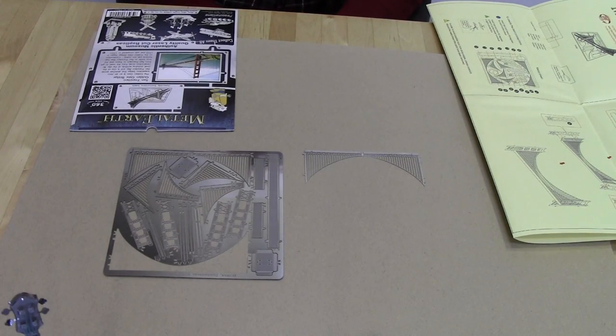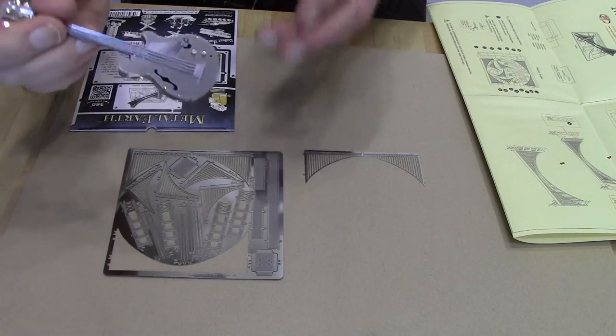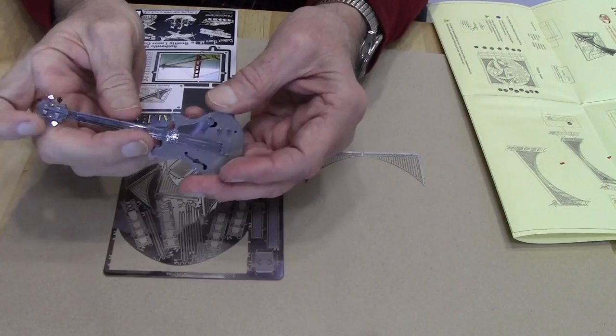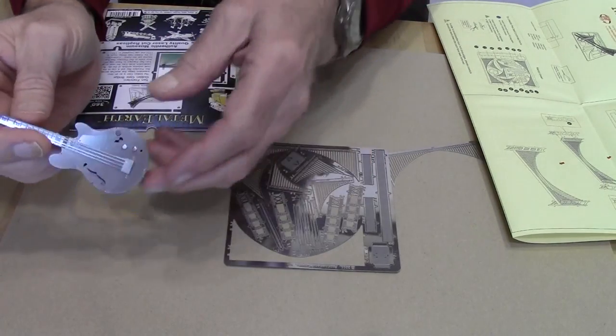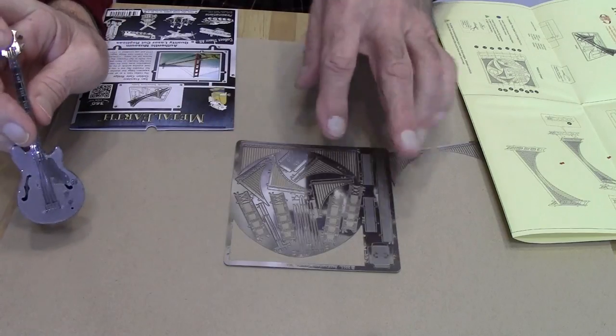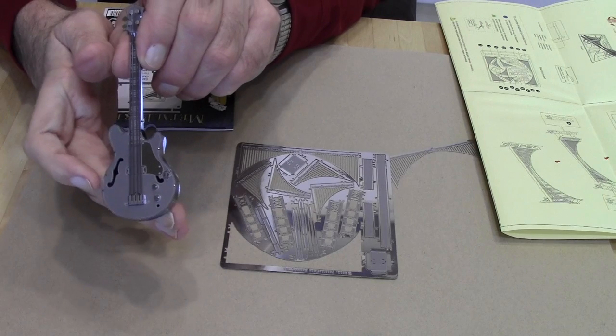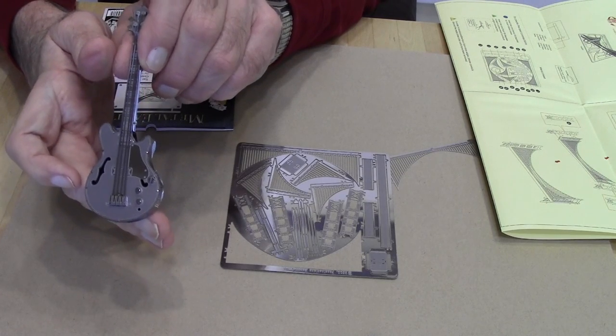First off, let me say that I'm very impressed with the precision of these kits. When looking at the finished guitar, it's hard to tell how it went together, but I can tell you that it all started out as a flat piece of metal just like this, and then by bending, folding, inserting tabs and sealing the tabs, it comes together.